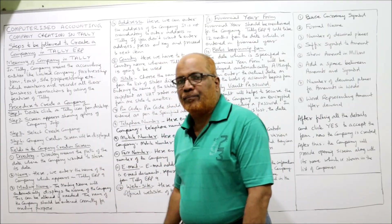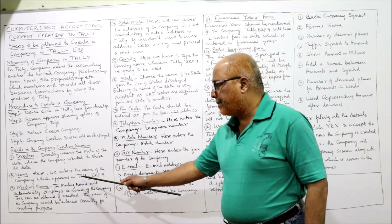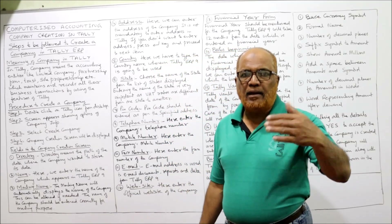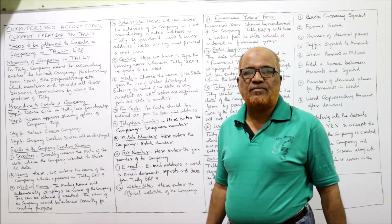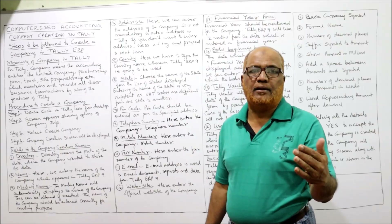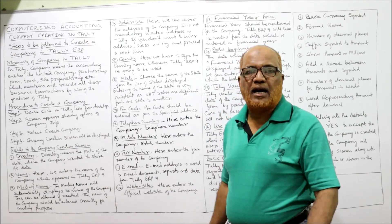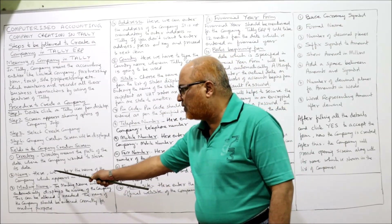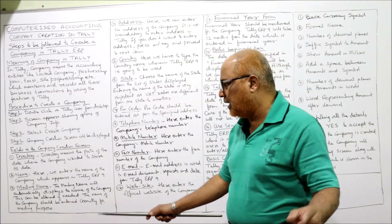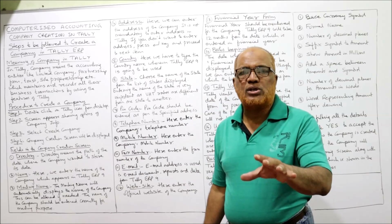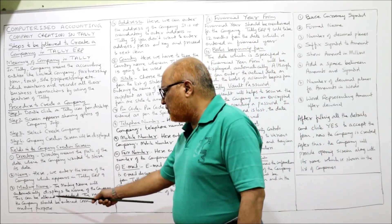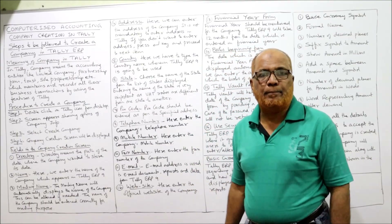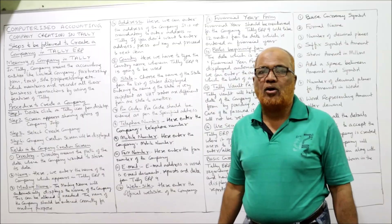The second field is 'Name,' where we enter the name of the company as it appears in Tally ERP 9. The third field is 'Mailing Name.' When we mail documents or reports, this name is used. It will automatically display the company name but can be altered if needed. Be careful when giving the mailing name because it will appear whenever documents are mailed.